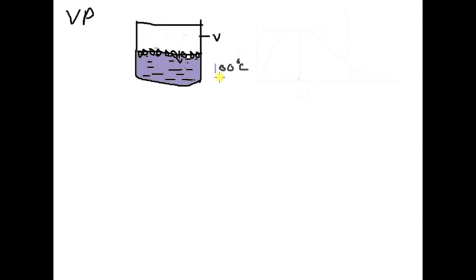We need to understand the kinetic molecular theory of liquids. We know that molecules in water are constantly moving. Since they can move, certain molecules might move with a higher kinetic energy than others. Suppose this is the molecule we are concerned with, and it is moving at a greater speed.